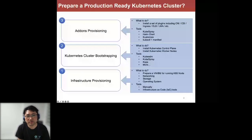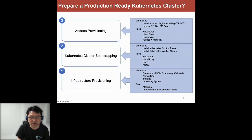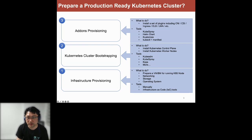In order to prepare a production-ready Kubernetes cluster, we need a set of steps. First, we need infrastructure provisioning — it can be VM or bare-metal — including networking, storage, operations, and so on. After that, we bootstrap the Kubernetes cluster, typically installing the control plane and workloads using tools like KubeAdmin, KubeSpray, or KOps.